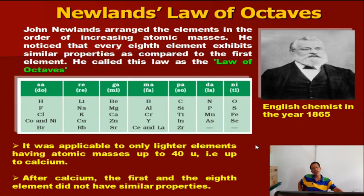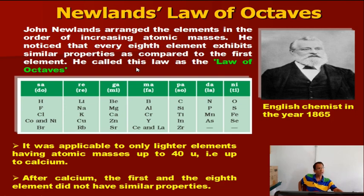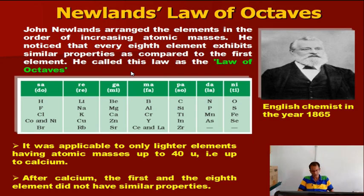The second law is Newlands' Law of Octaves. He was an English chemist in the year 1865 who arranged these tables. According to Newlands, elements are arranged in increasing order of atomic mass in such a way that every eighth element is the repetition of the first. That means the properties of the first element are similar to the eighth element. Similarly, the properties of the ninth element are similar to the second one.